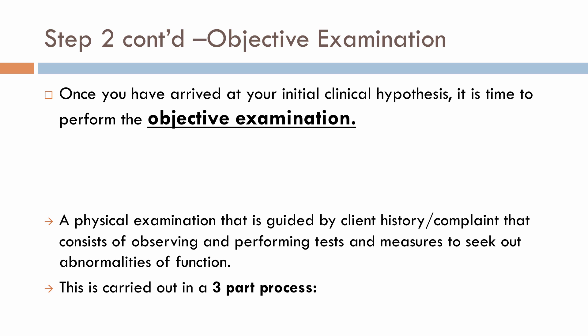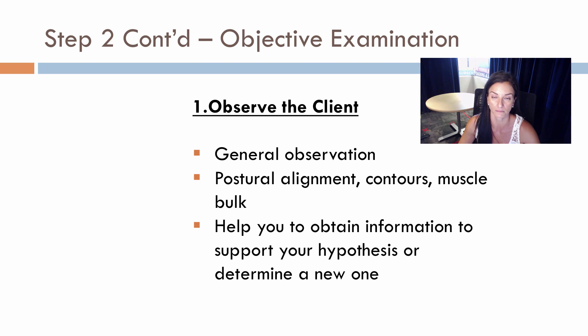Once you've arrived at your initial clinical hypothesis, it's time to perform the objective examination. The objective examination is a physical exam guided by client history and complaint, consisting of observing and performing tests and measures to seek out abnormalities of function. This is carried out in a three-part process. Number one: observe the client — make a general observation about their posture, contours, and muscle bulk.